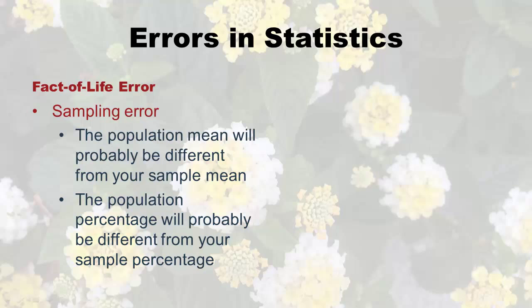That means if you take a sample to infer to the population, and you actually do an experiment where you have the population data and take a sample and compare the means, they will be different. There might be a huge coincidence where they're the same, but they're typically different. We know this is going to happen in statistics — we account for it and have ways of dealing with it. Whenever you take a sample from a population, the mean or percentage in the sample just won't be exactly what's in the population.